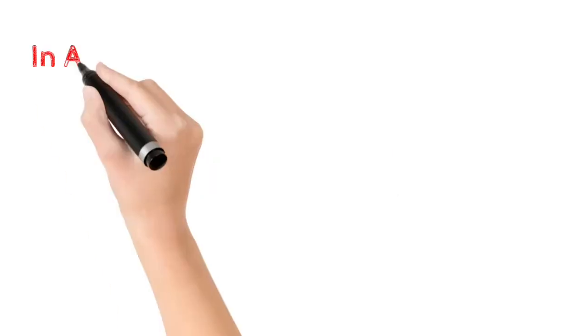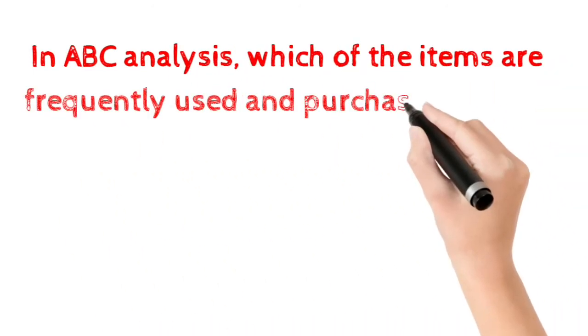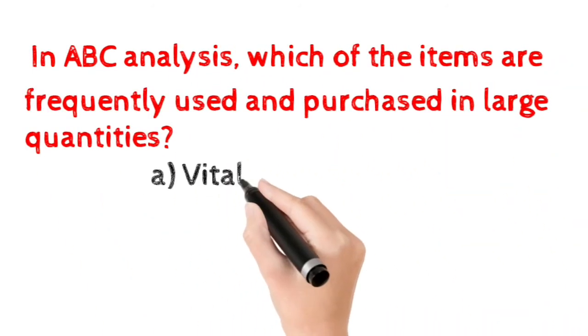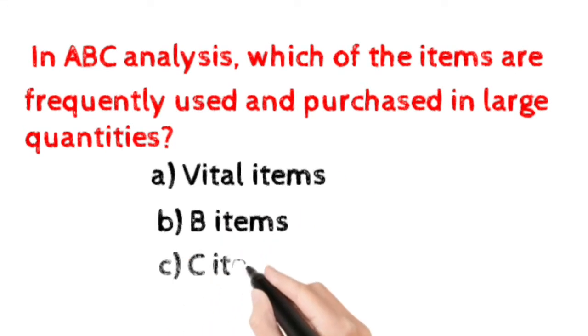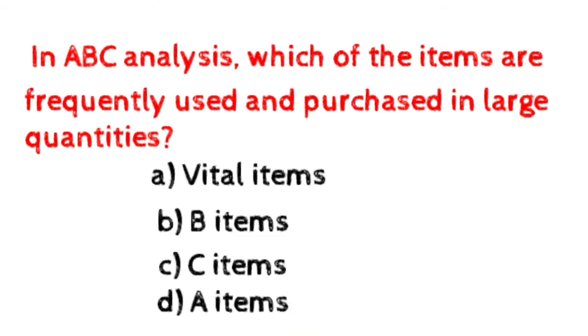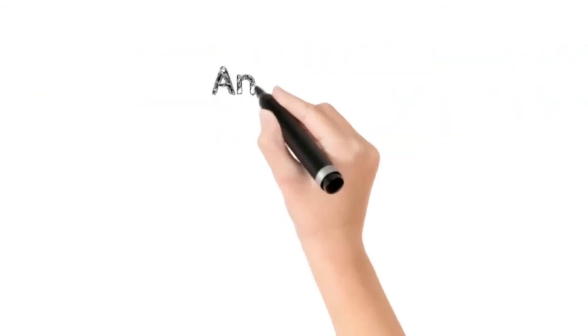Number three: In ABC analysis, which of the items are frequently used and purchased in large quantities? Option A: vital items. Option B: B items. Option C: C items. Option D: A items. Here the correct answer is option C, C items.